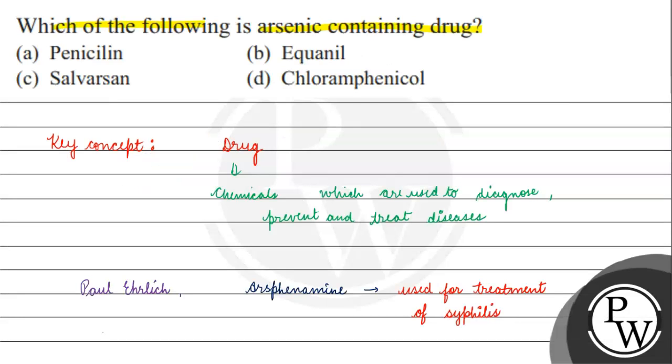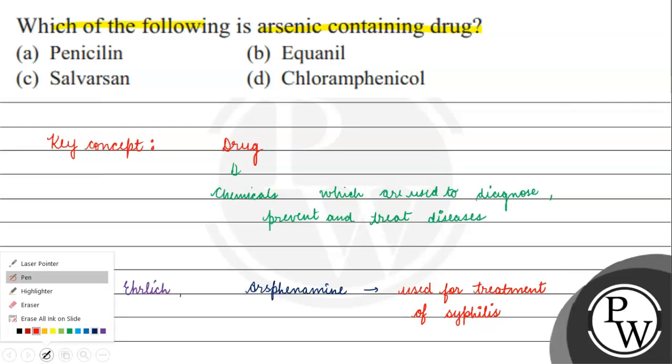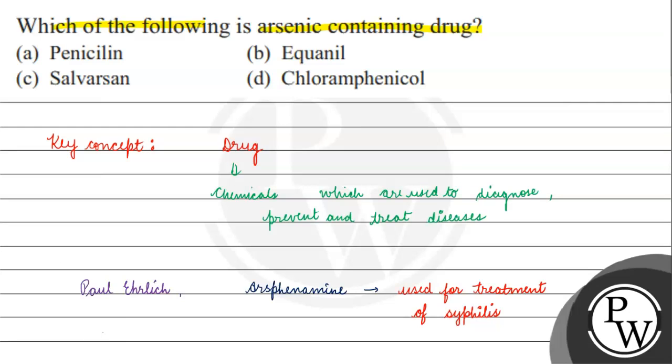Coming back to the question — which of the following is an arsenic-containing drug? The correct answer is option C, silvarsin (salvarsan). I hope you understood it well. Thank you and all the best.